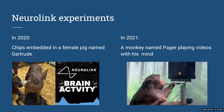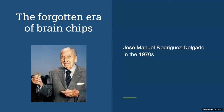In 2021, Neuralink showed a monkey named Pager playing video games with his mind. The game was a reward-based game. The monkey played using a joystick that was disconnected from the game console, meaning he was controlling the game using his brain signals as his arm moved. Many say that Elon Musk did not invent these concepts from scratch and is continuing the work of others.